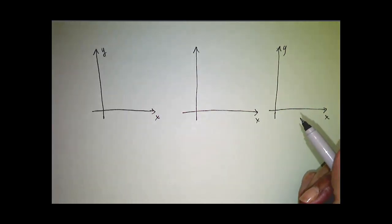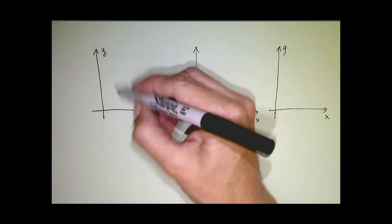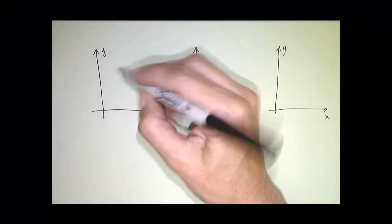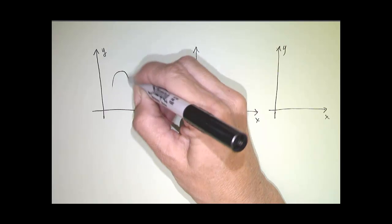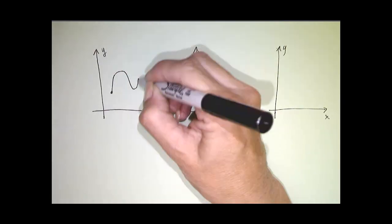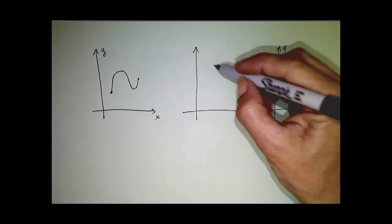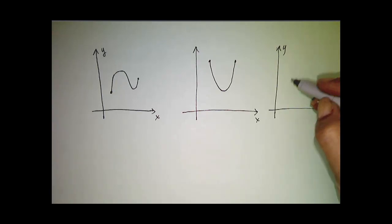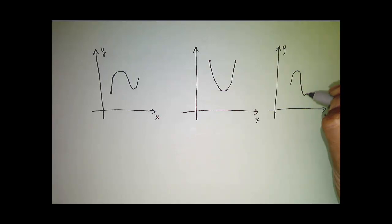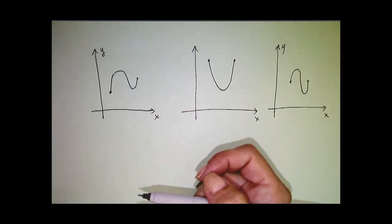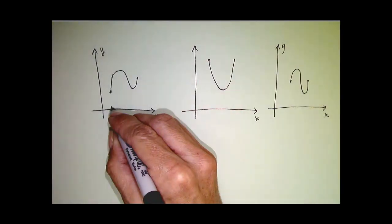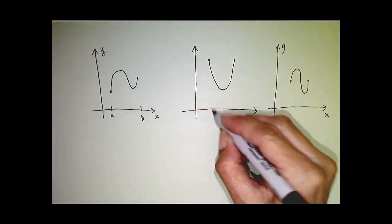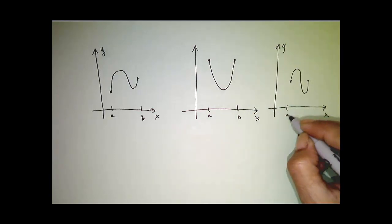Alright, if I asked you to draw a continuous function on a closed interval, you could have many different pictures to represent that. It may look like something like this, or it could be something like that, or it could be many different things. The point is, in all three of these, here's going to be my closed interval, a to b.